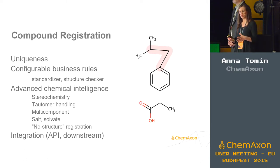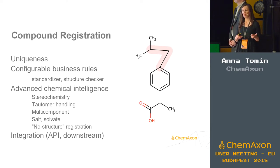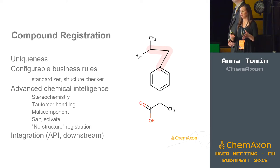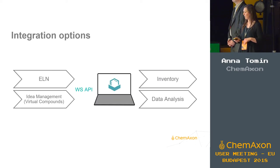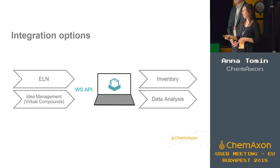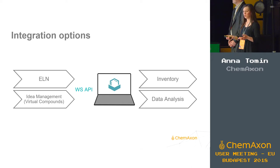In the back-end we use Chemaxon chemical intelligence, which includes proper stereochemistry handling and tautomer handling. You can also register virtual compounds or entities that do not have any structural representation. This is an integrable product that comes with a Java and a web service API. Compound registration can receive data automatically from external sources such as ELNs or idea management platforms using the web service API. If a submission fails, users with proper privileges can go to the user interface and correct failed submissions.